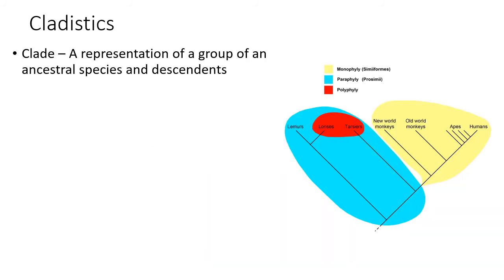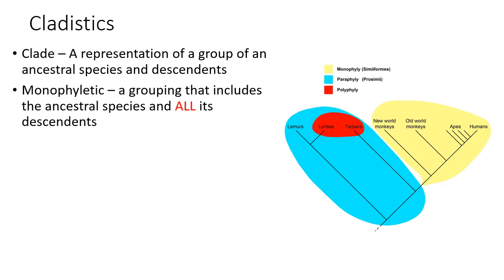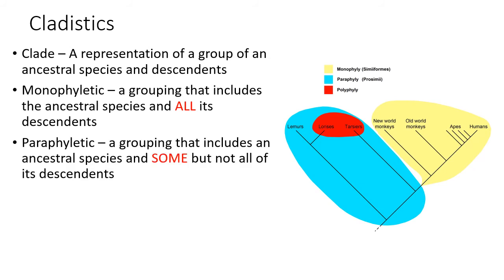Cladistics is another way of representing phylogenies, grouping organisms based on both ancestors and descendants. A monophyletic group contains an ancestor and all of its descendants — for example, Simiformes (new world monkeys and everything else branching to the right) is a monophyletic group called primates. A paraphyletic group includes some but not all descendants of an ancestor — prosimians (lemurs, lorises, and tarsiers) is a paraphyletic group.